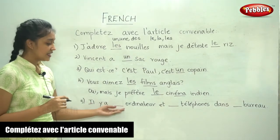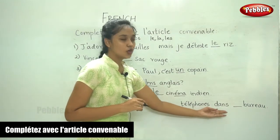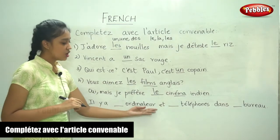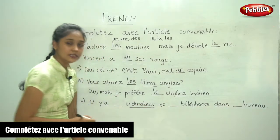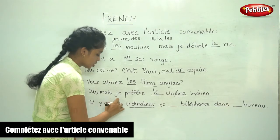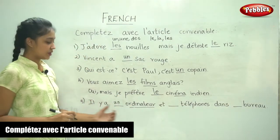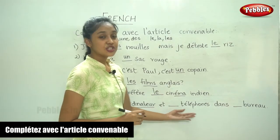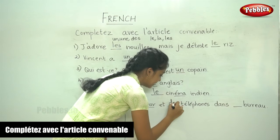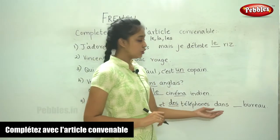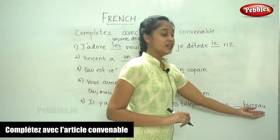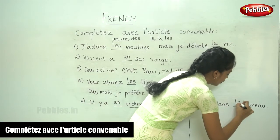'Il y a dash ordinateur, et dash téléphones dans dash bureau.' So the first blank: 'ordinateur' means computer and is in the masculine form, so there is a computer — 'il y a un ordinateur.' Then 'et dash téléphones' — this noun is in the plural form, so we write 'des'. And 'dans dash bureau' — we need the definite article, and the noun is masculine, so 'dans le bureau'.